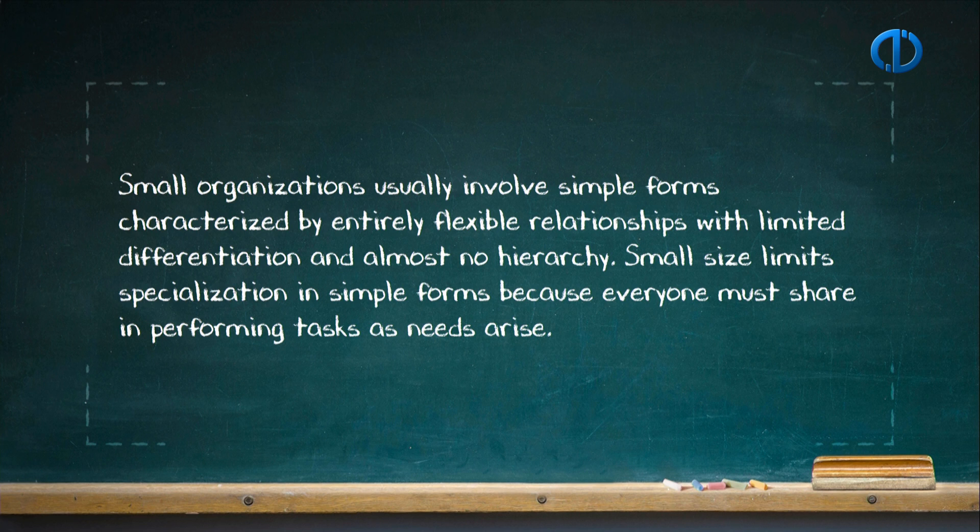Small organizations usually involve simple forms characterized by entirely flexible relationships with limited differentiation and almost no hierarchy. Small size limits specialization in simple forms because everyone must share in performing tasks as needs arise. Simple forms are characteristics of newly formed organizations or permanently small organizations. They also occur within prototype laboratories, product design or project teams, in cross-functional management groups, and many sub-units of large organizations.